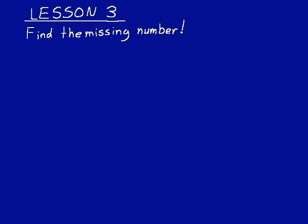I think the best way to do this lesson is to just do a lot of problems, so let's go ahead and start. Let's try this one. A — that's our missing number, we'll just call it number A. Write this down; anytime we're doing anything on the board, you should write it down with me. A plus 13 equals 26.